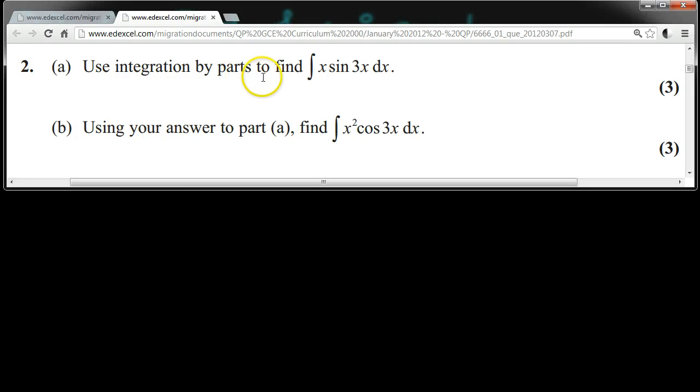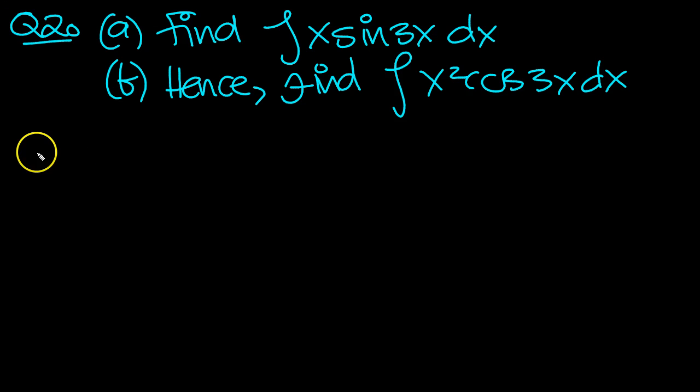Use integration by parts to find the integral of x sin 3x, and using your answer to part a, find the integral of x squared cos 3x. So here's the question in summary form. Let's have a look at part a.